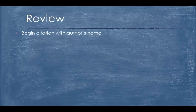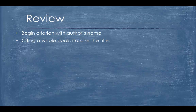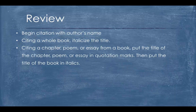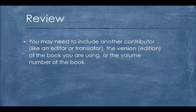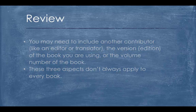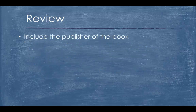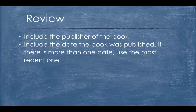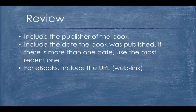To review: begin a citation with the author's name. If you are citing a whole book, italicize the title of the book. If you are citing a chapter, poem, or essay from a book, put the title of the chapter, poem, or essay in quotation marks, then put the title of the book in italics. You may need to include another contributor like an editor or translator, the version of the book you are using, or the volume number — these three aspects don't always apply to every book. Include the publisher of the book and the date it was published; if there is more than one date, use the most recent one. For e-books, include the URL, also known as the web link. Thank you.